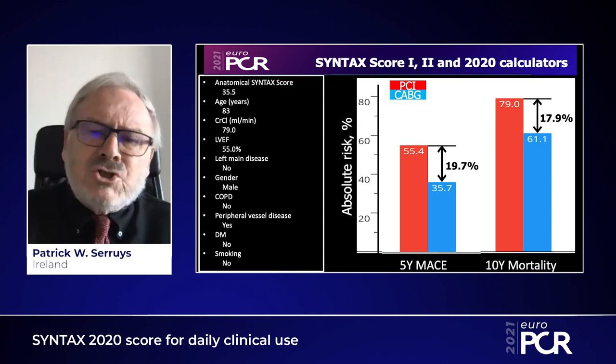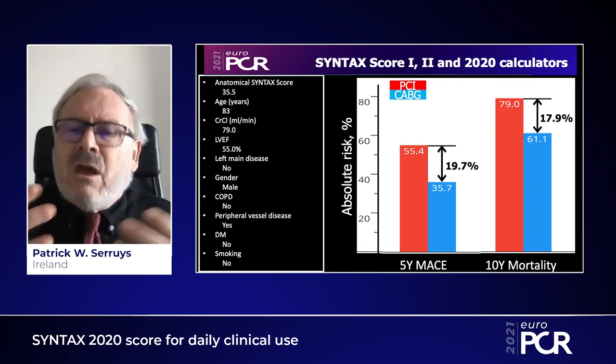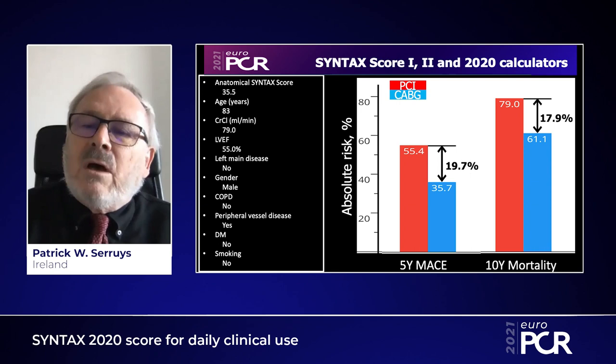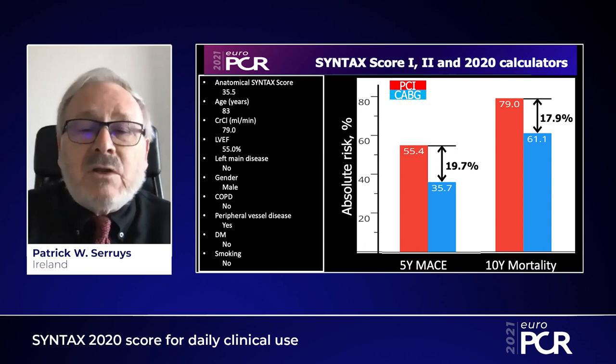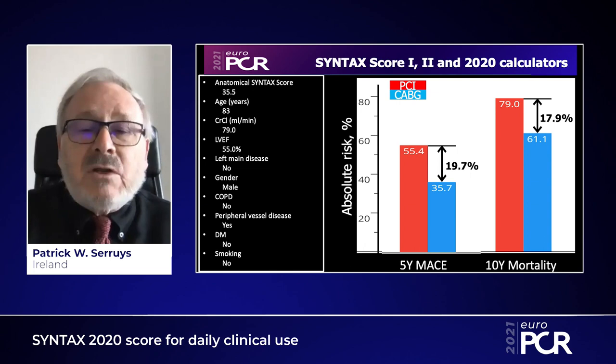We can share this information with the patient and the family to facilitate their own decision. I can imagine that at 83 years old, to hear that the chance to die with PCI is 79% seems quite awful — but at that time, it will be at age 93. That is the goal of the SYNTAX score 2020. Thank you very much.